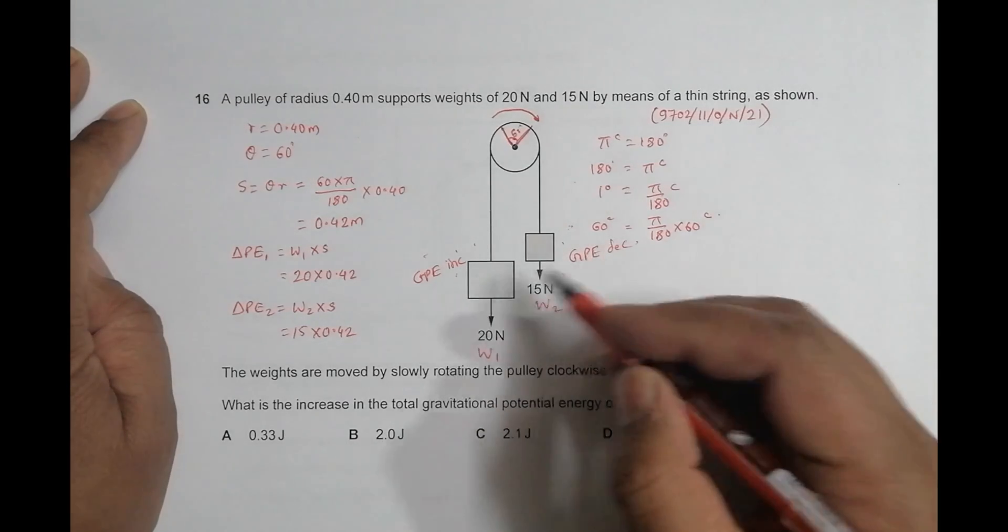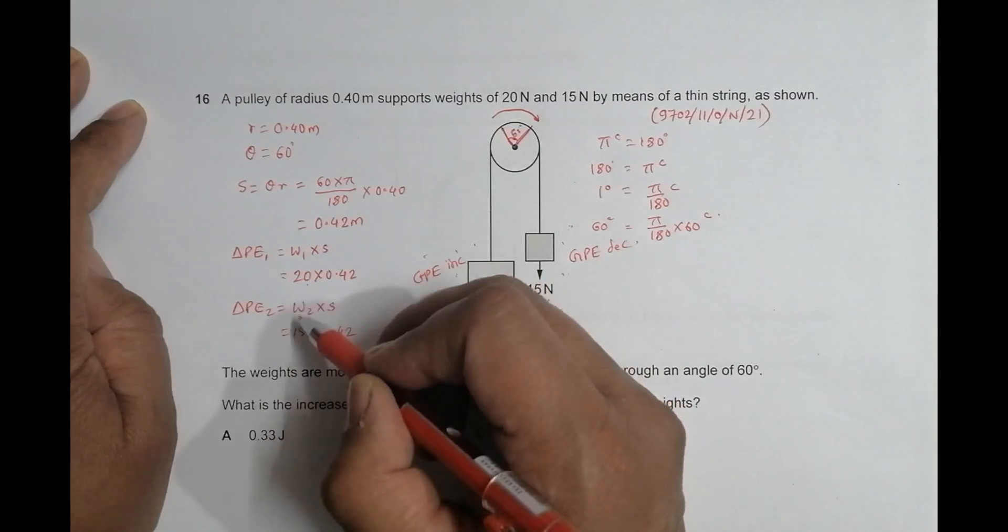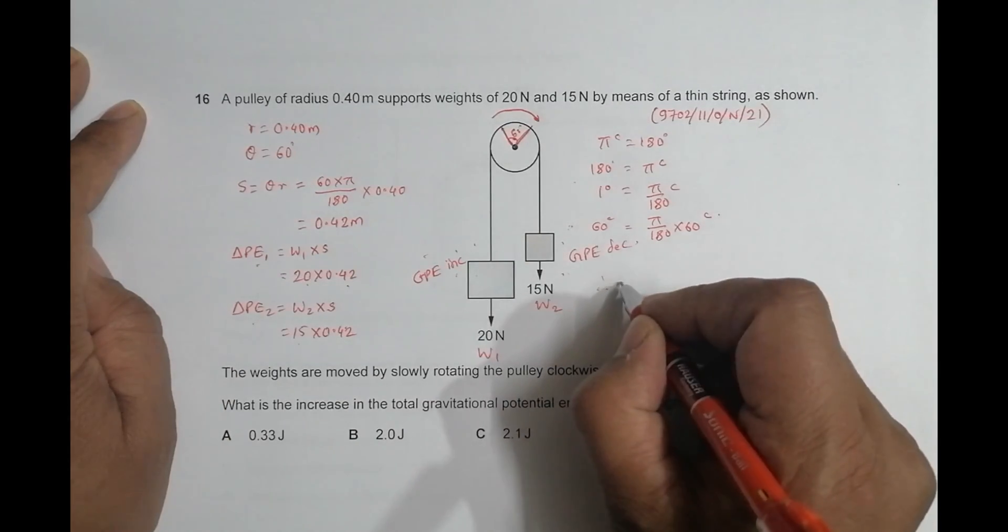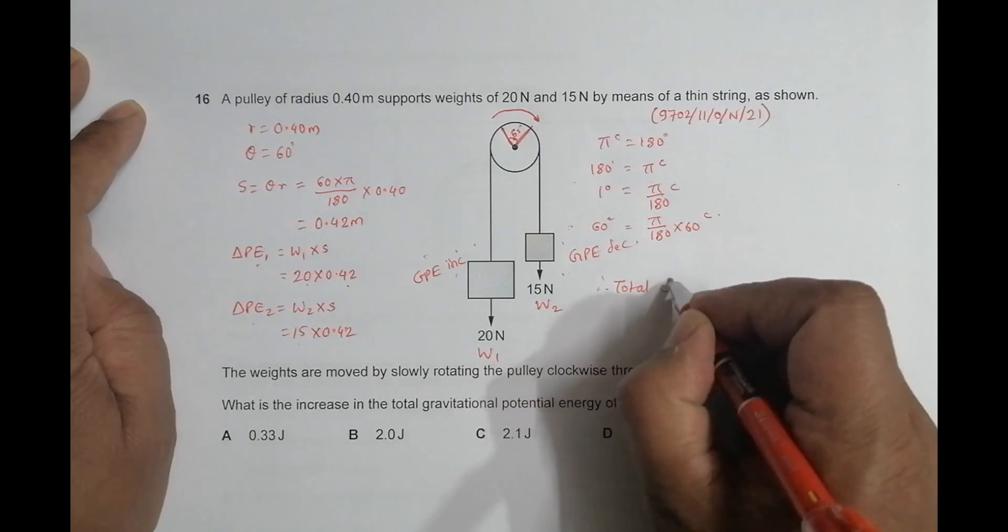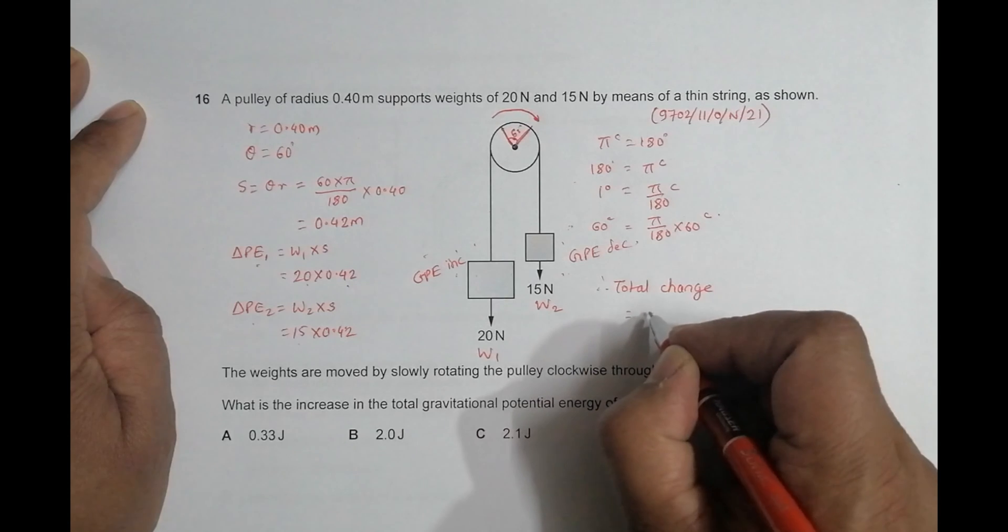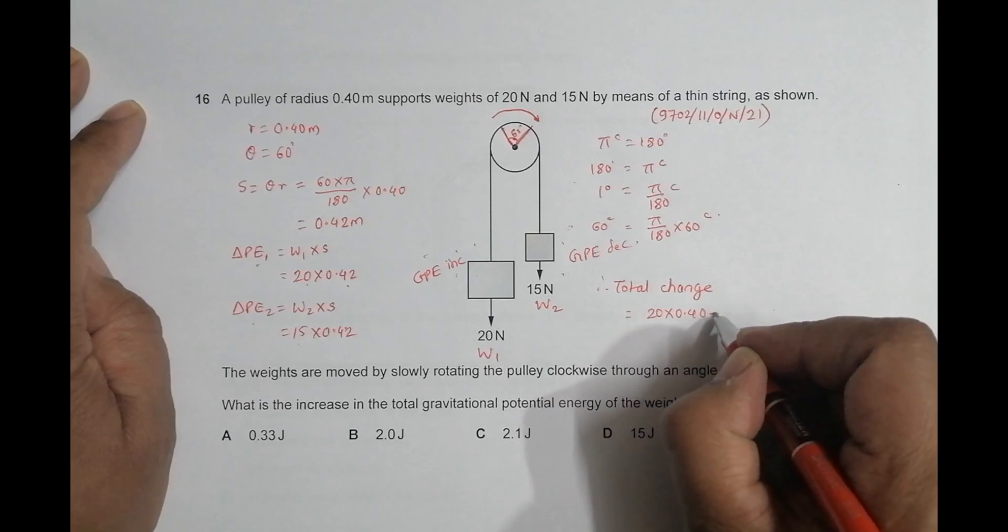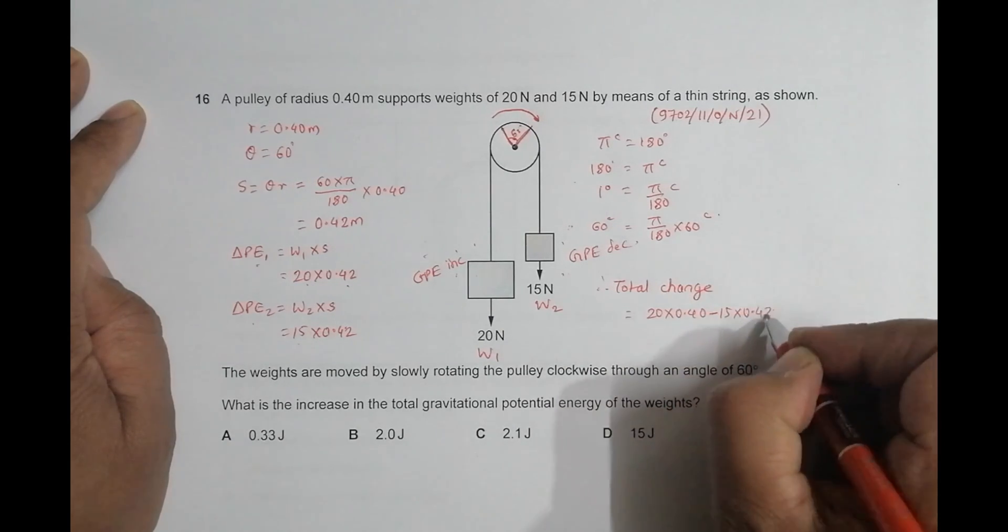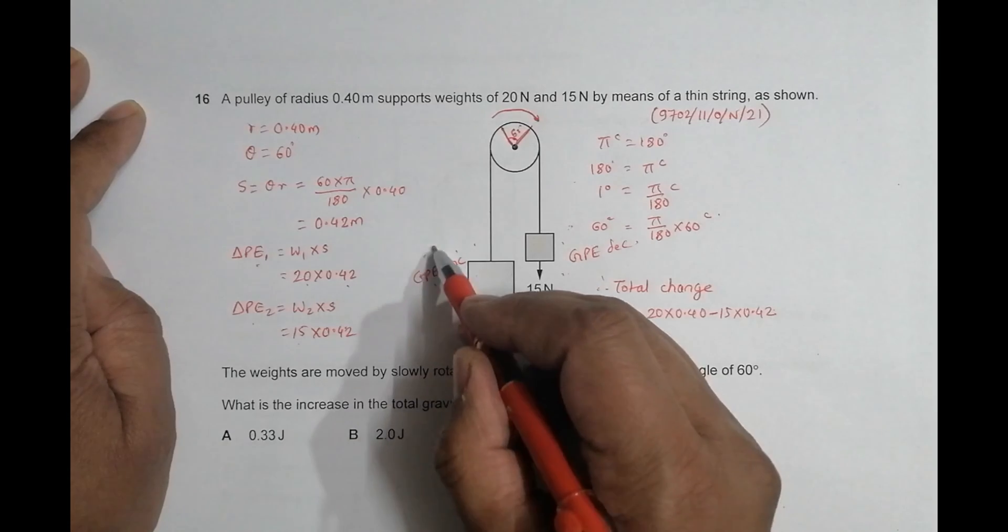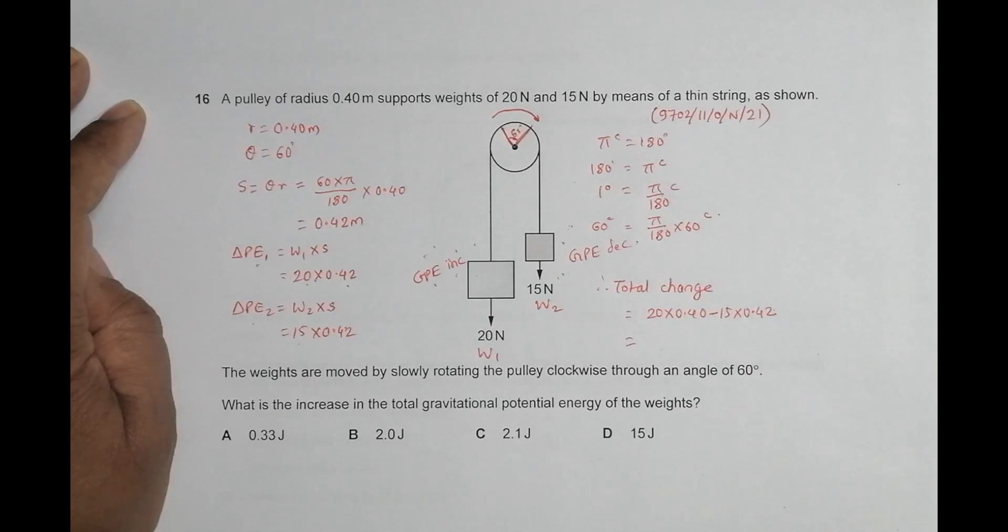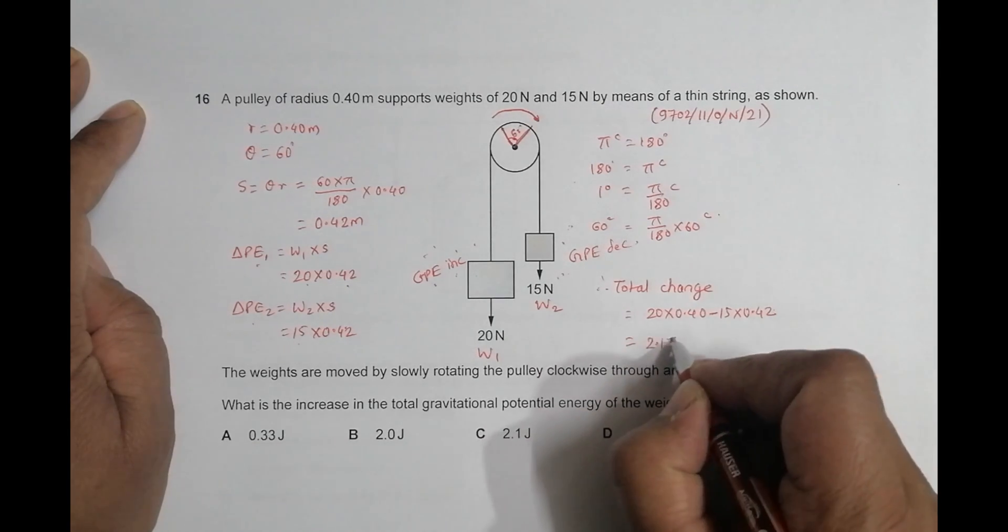So now the total change should be equal to, we have got this is 20 and 15, this is 42, so this thing is greater, this is smaller. So therefore, overall, total change should be equal to 20 into 0.40 minus 15 into 0.42, because it will increase, its decrease, so they are of opposite signs like this. So when we are doing calculations, it will be equal to 20 minus 15 is 5, so it is 5 into 0.42, becomes 2.1, so it is 2.1 joules.